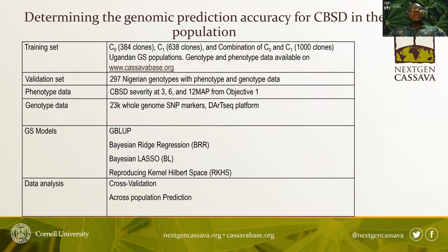We then explored whether we could use genomic selection to improve cassava brown streak disease resistance. We used the C0 and C0-C1 combinations of the Ugandan cassava genomic selection populations as our training set. The validation set comprised the 297 Nigerian genotypes that remained. For our GS models, we used GBLUP, Bayesian regression, Bayesian lasso, and reproducing kernel Hilbert space (RKHS).